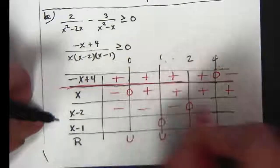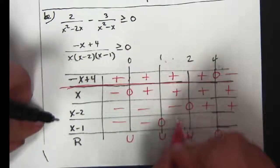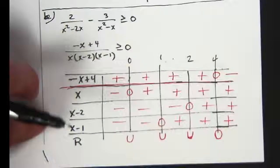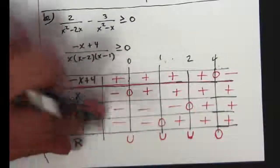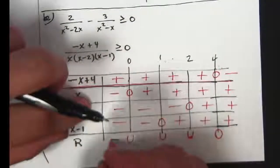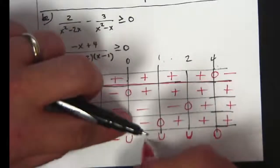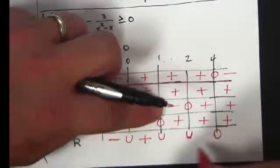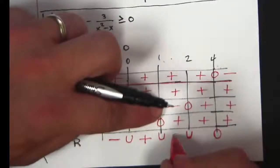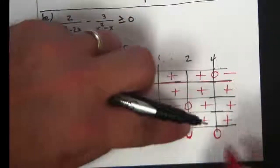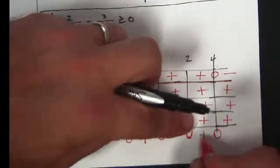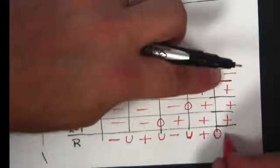These all have positive slopes, so they are negative before their zeros and positive after. Negative, negative, negative, positive, positive, negative, negative, positive, positive, positive. And now we just count how many negatives. Three negatives, that's negative. Two negatives, positive, one negative. That's right. Bunch of negatives or positives, positive. And one negative, negative.